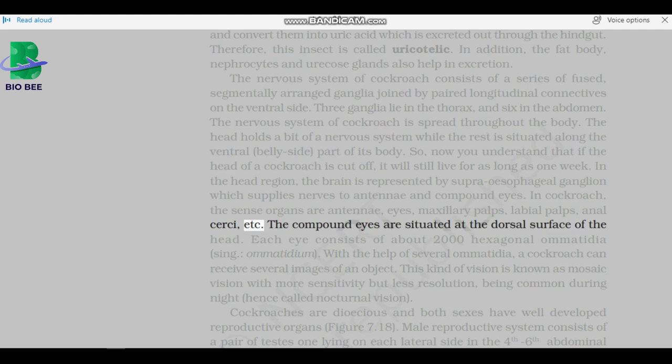The compound eyes are situated at the dorsal surface of the head. Each eye consists of about 2,000 hexagonal ommatidia. With the help of several ommatidia, a cockroach can receive several images of an object. This kind of vision is known as mosaic vision with more sensitivity, but less resolution, being common during night, hence called nocturnal vision.